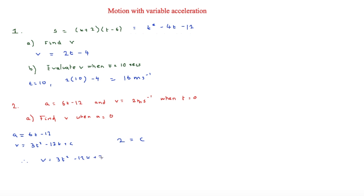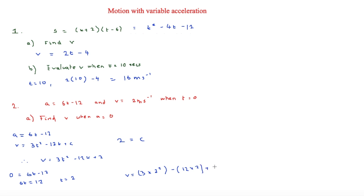Now we find v when a = 0. Setting 6t − 12 = 0 gives 6t = 12, so t = 2. Substituting t = 2 into v = 3t² − 12t + 2: v = 3(4) − 12(2) + 2 = 12 − 24 + 2 = −10 meters per second.